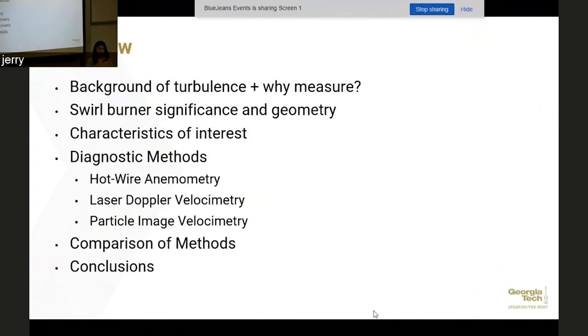I'll give a background of turbulence and why we need to measure it. I'll go into the specifics of our swirl burner nozzle and the geometry specific to that. I'll also cover a few turbulence characteristics that might be of interest. I'll just cover a few different diagnostic methods: hotwire anemometry, laser doppler velocimetry, and particle image velocimetry. I'll compare these methods and then conclude with their applications to our swirl nozzle burner.